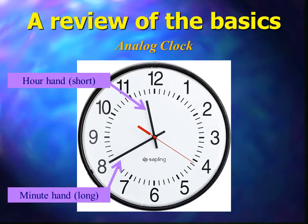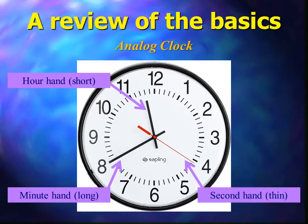Some analog clocks have a second hand, which is usually thinner than the other two. Sometimes, as in this case, it is red. The second hand indicates the seconds around the clock face.